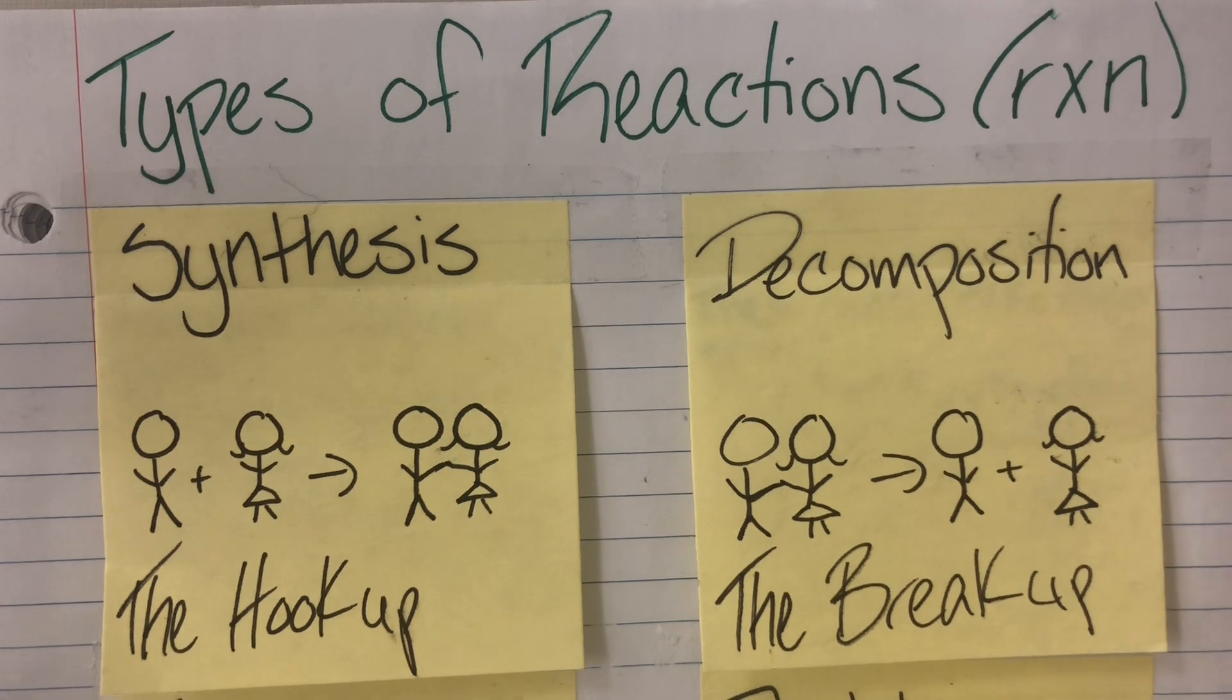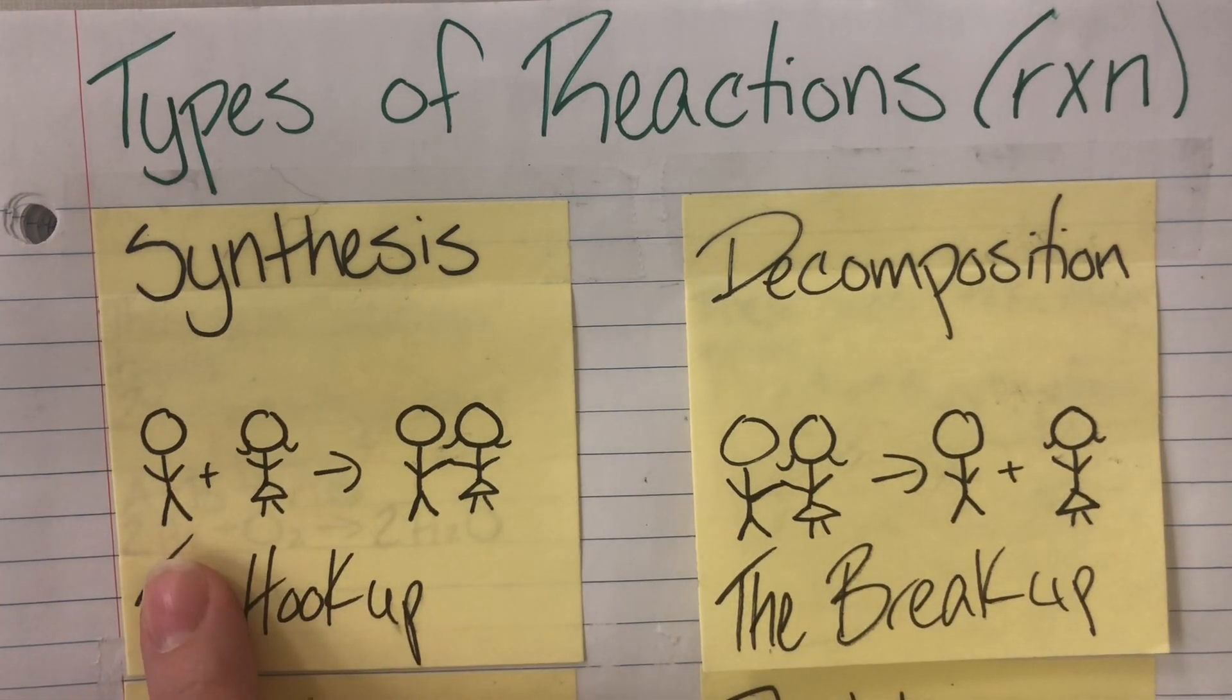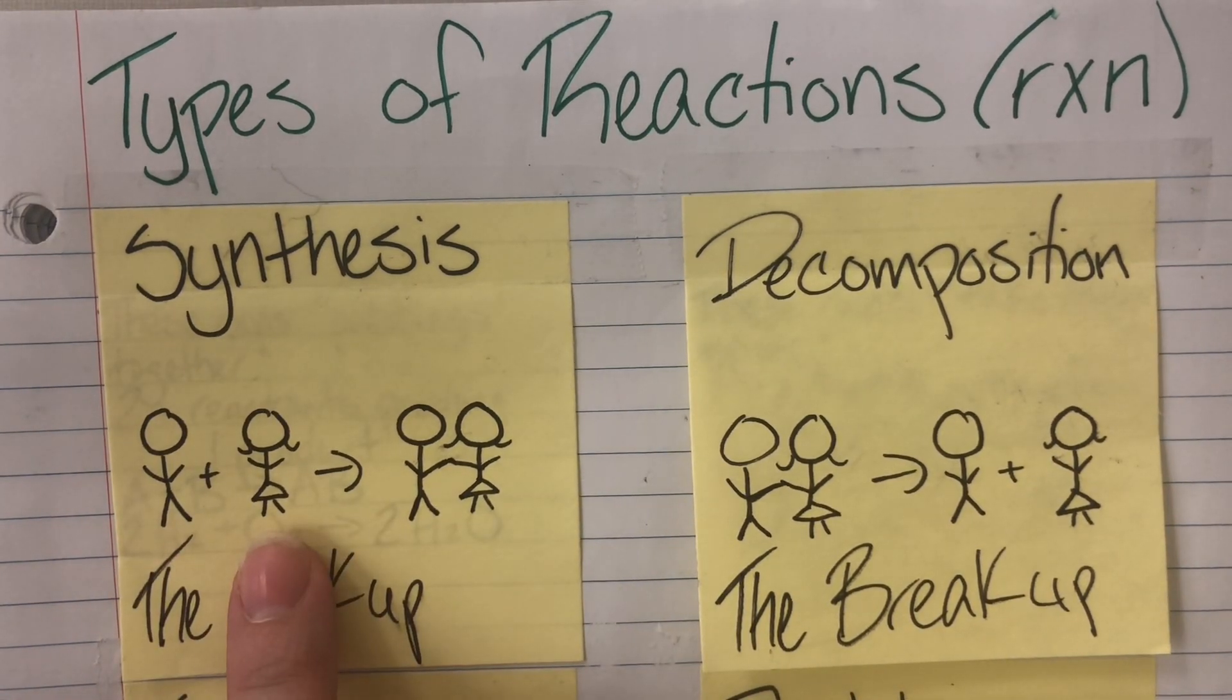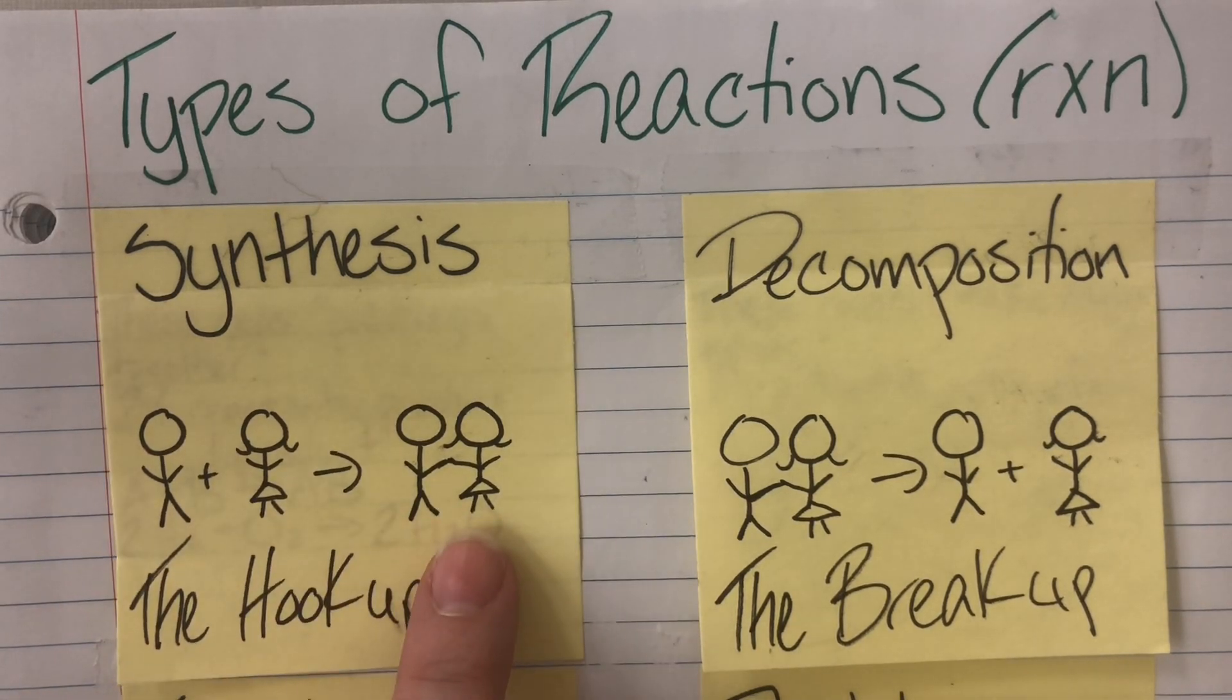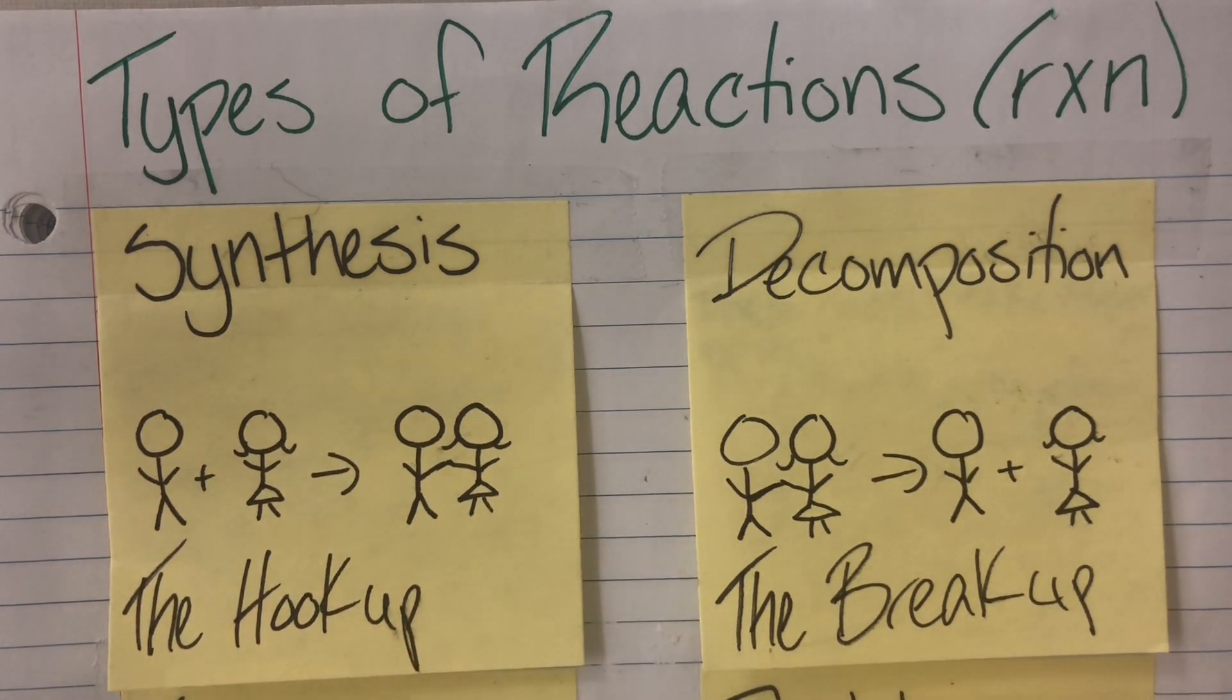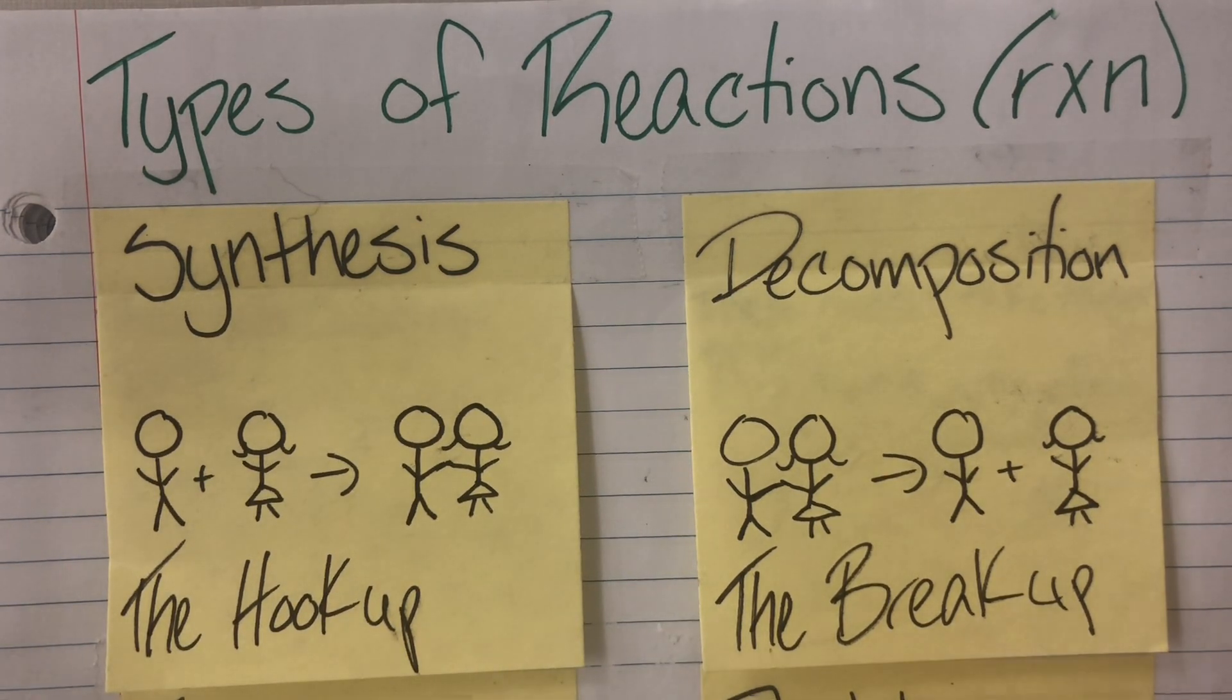So first up we have synthesis. I have a bald boy and triangle skirt girl and they are initially single elements but they will come together to form a new couple. My nickname for this one is going to be the hookup.